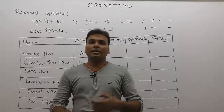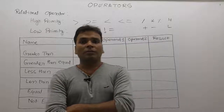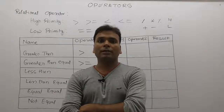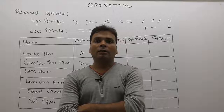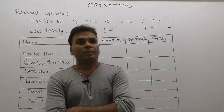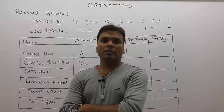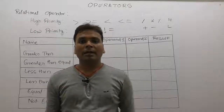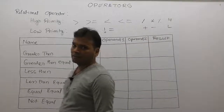Relational operators are used only for comparison purposes. With respect to comparison, there are four criteria: first, equality — both are same or different; second, not equals — not same; third, respect to smallest; and fourth, respect to greatest. These are the four comparison criteria available for relational operators.